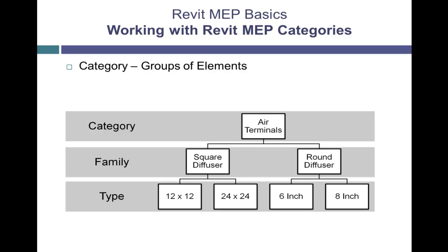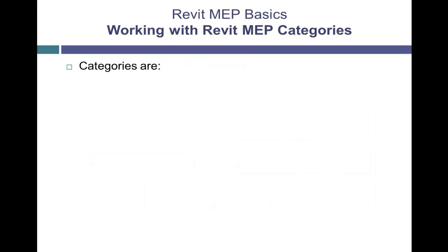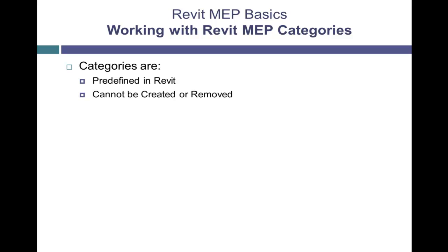The example shown here is for the air terminal category. Categories are predefined in Revit and cannot be created or removed. Categories are important in visibility settings for views.